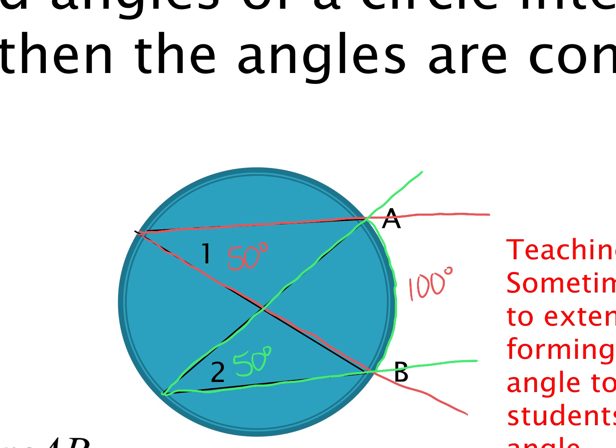Even though angle one's vertex is over here and angle two's vertex is over there — they are congruent because they have formed the same intercepted arc.